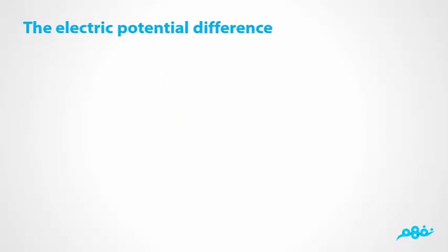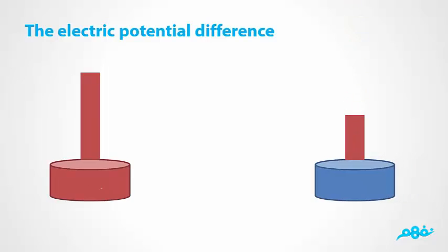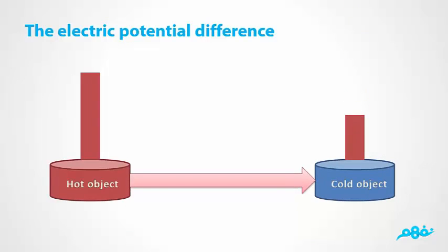The electric potential difference: Temperature moves from a hot object to a cold one and continues to move until the two temperatures are equal. The movement of temperature does not depend on the size of the two objects, but on the difference in their temperatures. Similarly, if two charged conductors touch, the electric current will move from the high potential conductor to the low one until they become equal. The flow of charges depends not on their amount, but on the conductor potential difference relative to the other conductor.